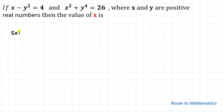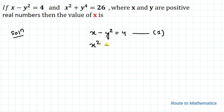So without any delay, let's start the solution. Our first equation is x minus y² equals 4. Our second equation is x² plus y to the power 4 equals 26.